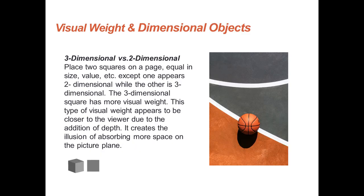Last but not least is three-dimensional versus two-dimensional. Place two squares on a picture plane equal in size, value, etc., except one is two-dimensional while the other is three-dimensional. The three-dimensional square has more visual weight. This type of visual weight appears closer to the viewer due to the addition of depth, and it creates the illusion of absorbing more space on the picture plane.